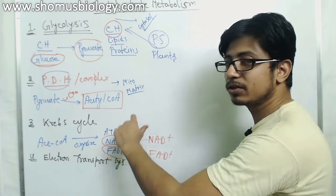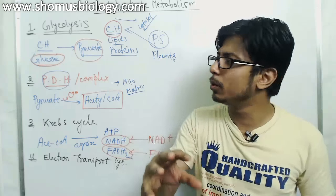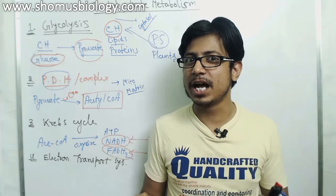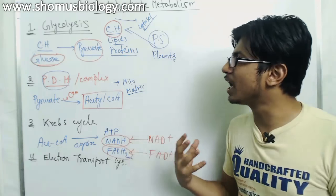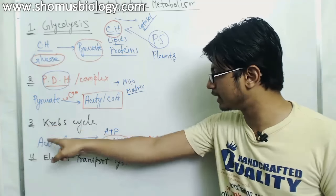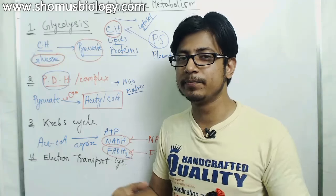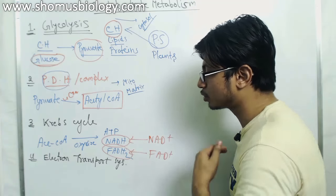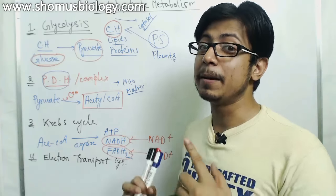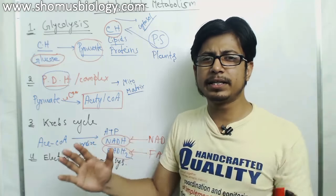These electron donors help generate more and more ATP molecules, which is the ultimate goal of cellular respiration. When you eat food, glucose is degraded into pyruvate, converted into acetyl-CoA, and taken through the Krebs cycle producing NADH and FADH2. If oxygen is adequate, these pass through the electron transport chain to generate ATP.